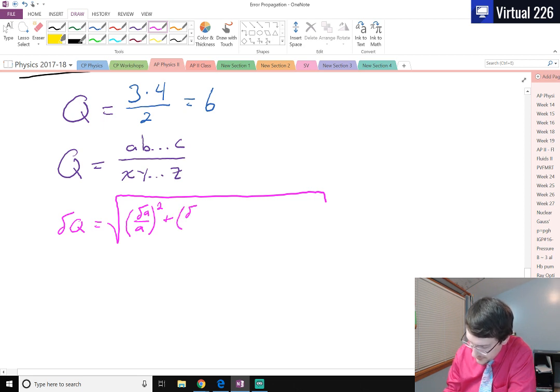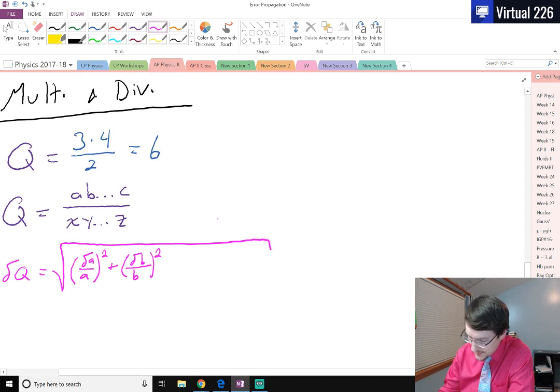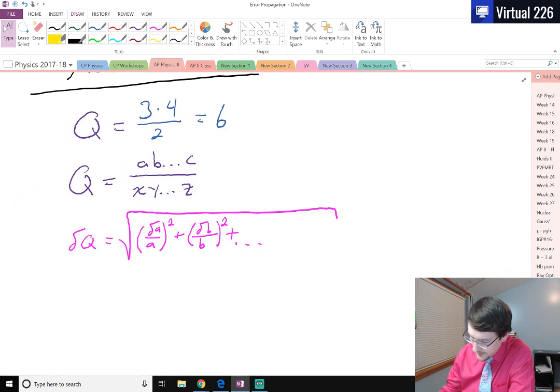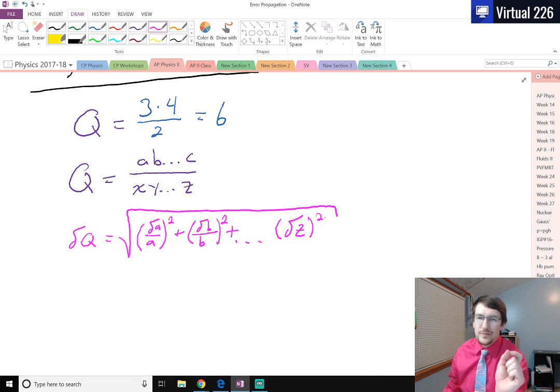And then we do this for everything. So we just continue this for B and B squared, we do this all through C, and then for X Y and Z. So we can just say plus dot dot dot. We add all these together, no matter if they're multiplying or dividing, but we get all the way out to Z squared.